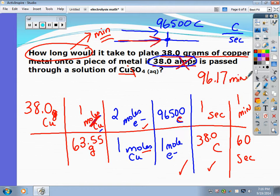Right? Because what happens? Our grams of solid copper cancel. Our moles cancel. Our moles of electrons cancel. That's why we set it up this way. My coulombs cancel. My seconds cancel. I'm left with minutes.